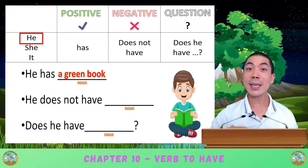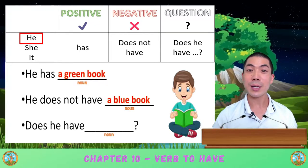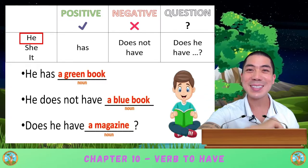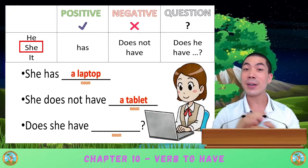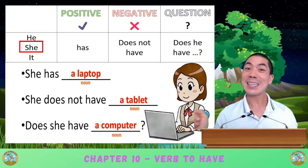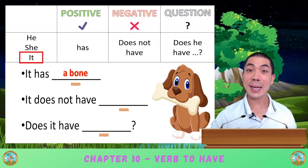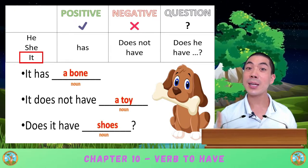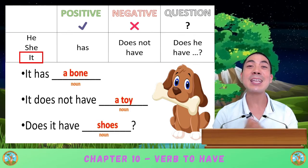In this picture, we can say 'He has a green book. He does not have a blue book.' And for the question, 'Does he have a magazine? No, he has a book.' In this picture, we can say 'She has a laptop. She does not have a tablet.' And the question, 'Does she have a computer? Yes, she has a computer laptop.' Good job. In this picture, we can say 'It has a bone. It does not have a toy.' And the question, 'Does it have shoes? No, it does not have any shoes.' Nice.